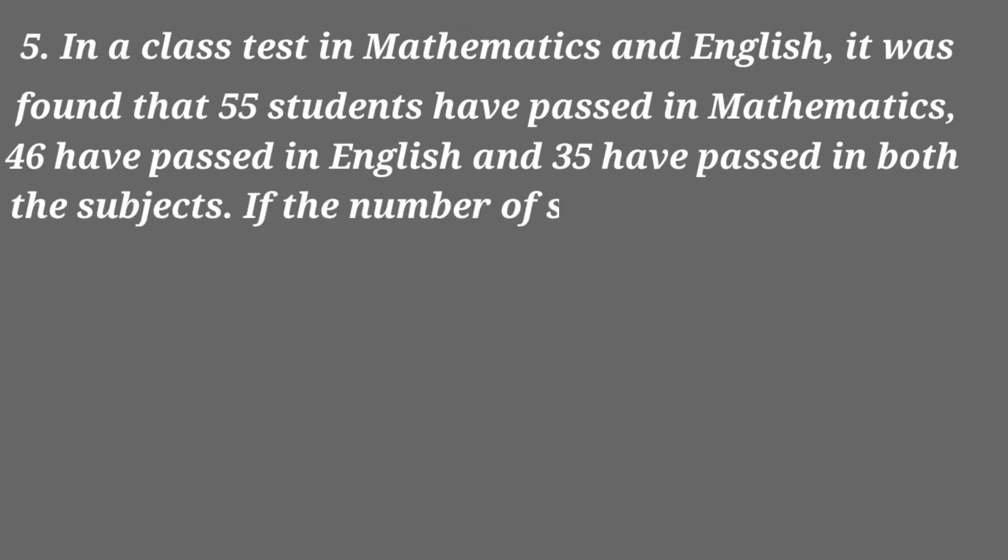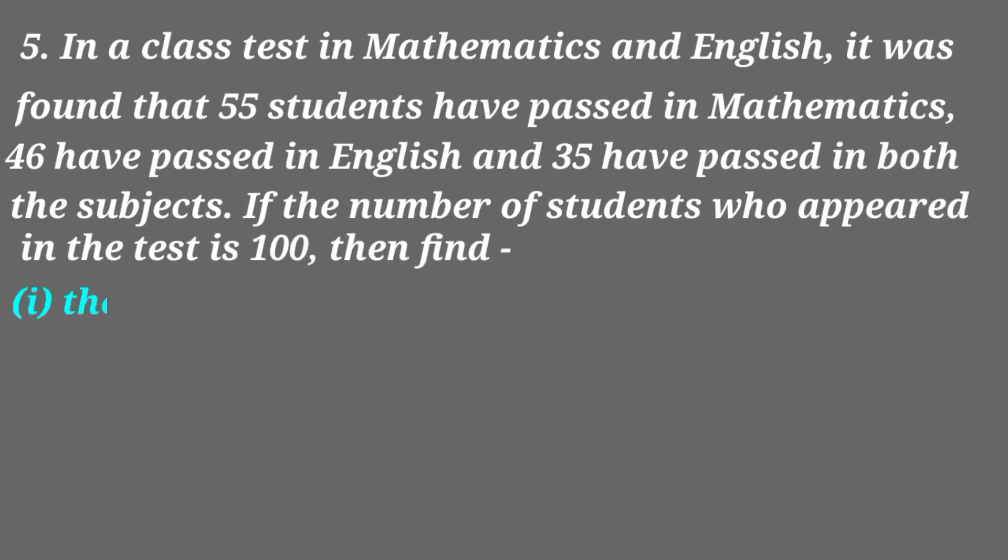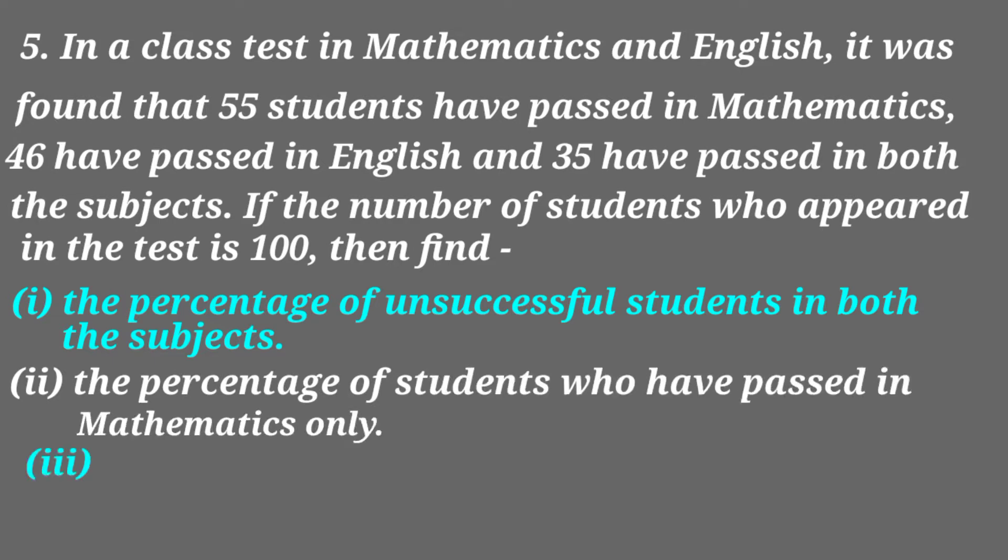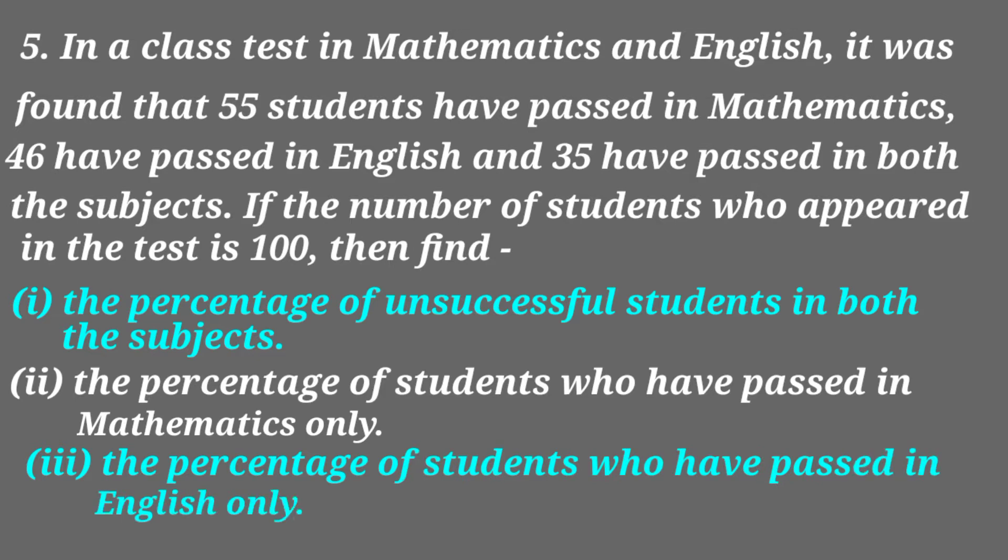If the number of students who appeared in the test is 100, then find: (i) the percentage of unsuccessful students in both subjects, (ii) the percentage of students who have passed in mathematics only, (iii) the percentage of students who have passed in English only.